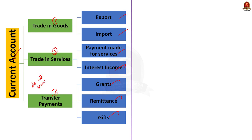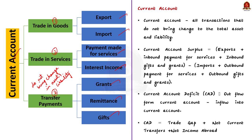The current account may be surplus or deficit. Current account is said to be in surplus when the sum of exports, inbound payment for services, and inbound gifts and grants is higher than the sum of imports, outbound payment for services, and outbound gifts and grants. The reverse is termed as current account deficit, that is when outflow of funds is more than inflows.